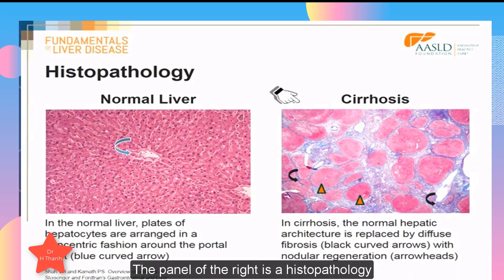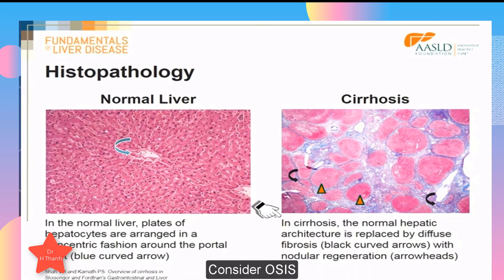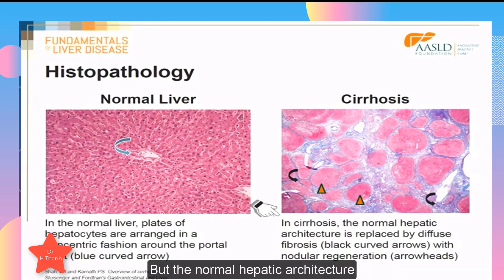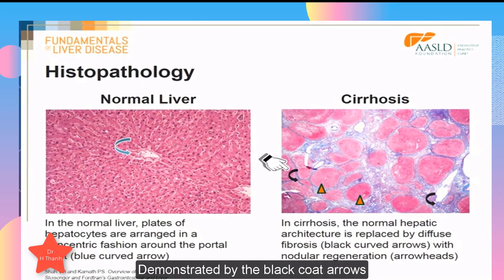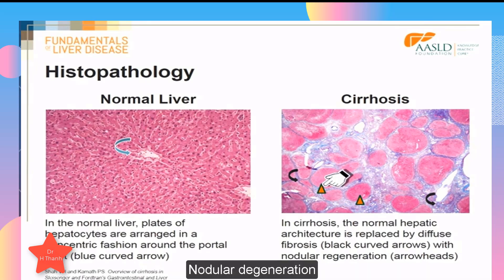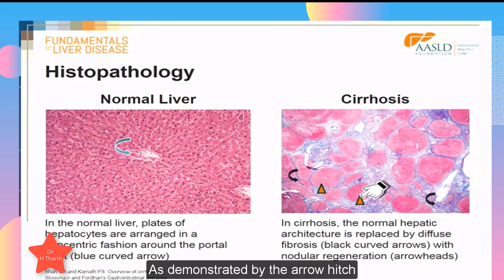The panel on the right shows the histopathology in cirrhosis, where the normal hepatic architecture is replaced by diffuse fibrosis, demonstrated by the black curved arrows, with nodular regeneration, as demonstrated by the arrowheads.